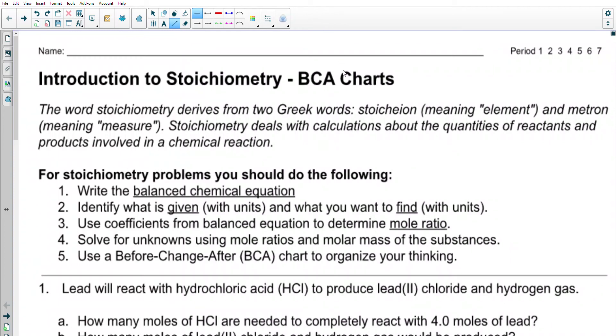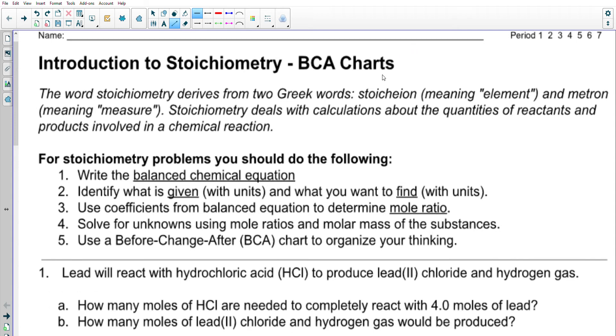I hope everyone is well. This is a video on introduction to stoichiometry using a technique called BCA charts. Stoichiometry sounds like a fancy word, and it kind of is. It's a part of chemistry where we deal with calculations involving quantities in reactants or products. It comes from two Greek words: stoichion meaning element and metron meaning measure. So stoichiometry is all about measuring elements.